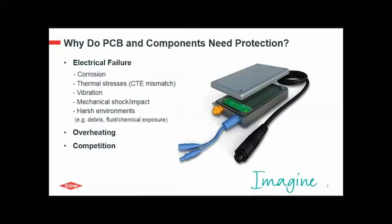So, why does a PCB and its components need protection? There are three main reasons. The first is electrical failure, which can have different causes like corrosion, thermal stresses due to CTE mismatch of different materials and substrates, vibration, mechanical shock or impact, and exposure to harsh environments. Another reason is overheating — parts today are getting smaller and smaller with more functionality, so temperature increases to a high extent. And a third, not so obvious reason is protection from competition: you may not want others to look at the design and components used on your board.